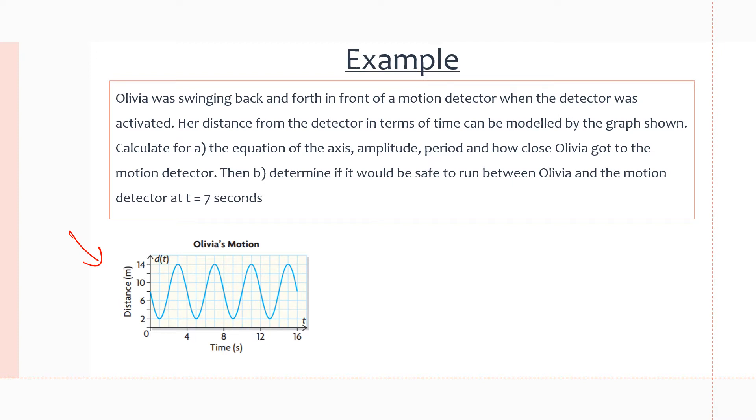We have a girl named Olivia swinging on a swing and there's a motion detector right in front of her showing how far she is from the motion detector at a certain time. As time goes on in seconds, she starts eight meters from the motion detector, swings towards it and away from it, and so on. The motion detector is at zero, at y equals zero.